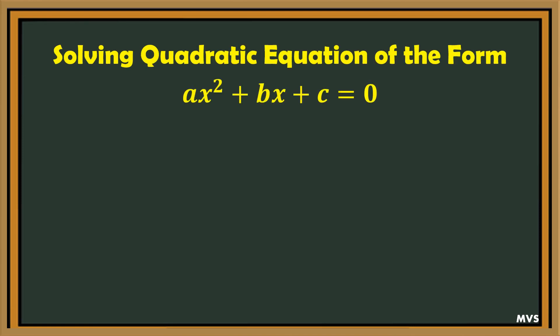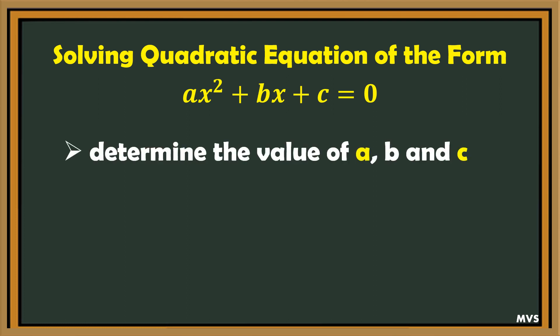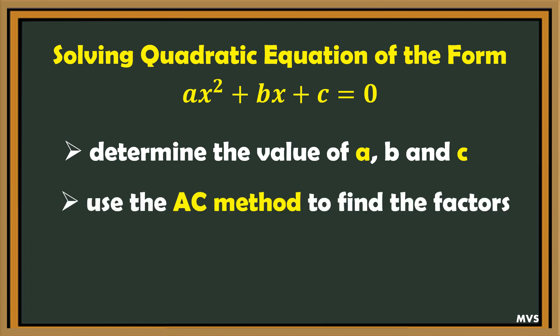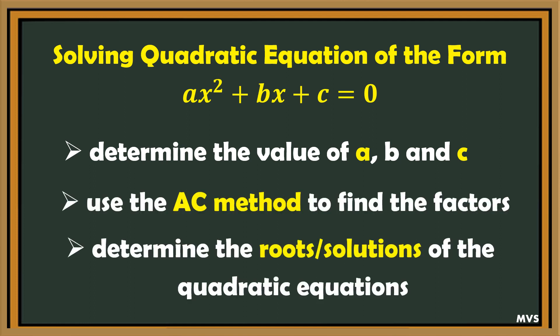In solving a quadratic equation of the form ax squared plus bx plus c equals zero: first, determine the value of a, b, and c. Second, use the AC method to find the factors. And determine the roots of the quadratic equation.